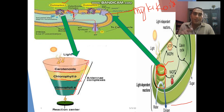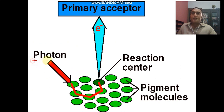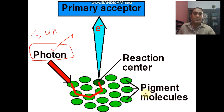The thylakoids are stacked into the grana, and on the photosystem there is a reaction center. The reaction center absorbs the photon emitted from sunlight. The photon is absorbed by the antenna complex system — a molecular pigment system within the antenna complex.